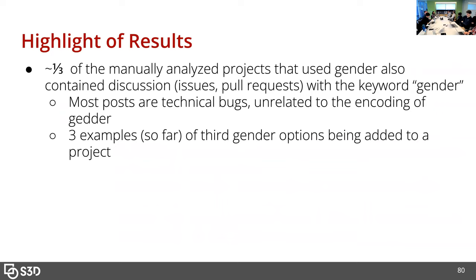About a third of the manually inspected projects that actually used gender data had the word 'gender' in one of their issues. For the most part, those examples are things where gender is not displaying properly on the page, or other technical bugs that aren't really about how gender is encoded. I did find three examples so far where it was about adding gender or adding a third gender option to the project, but there was no discussion on those posts, so they're not very useful.